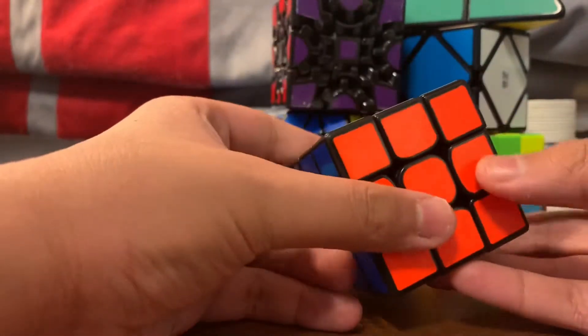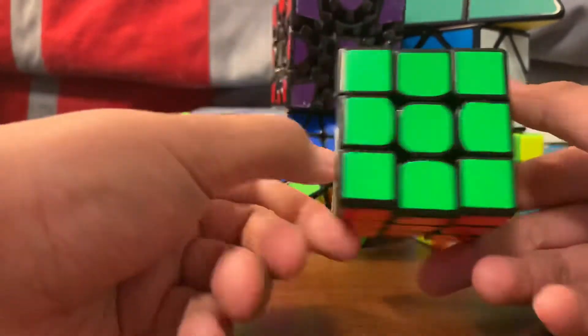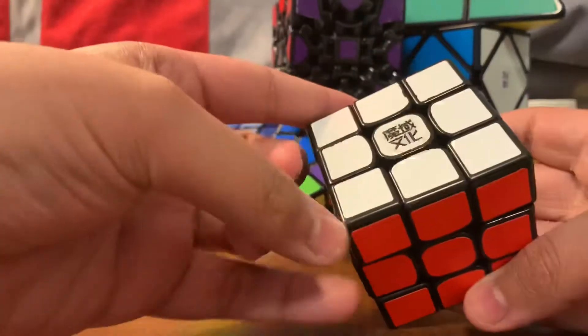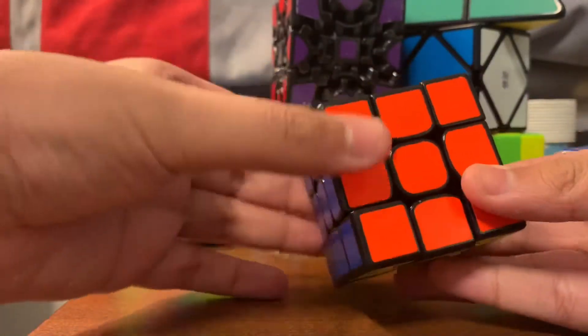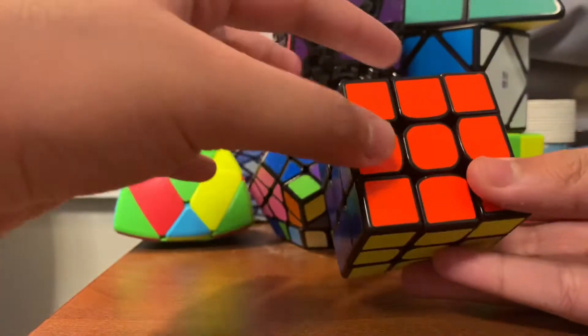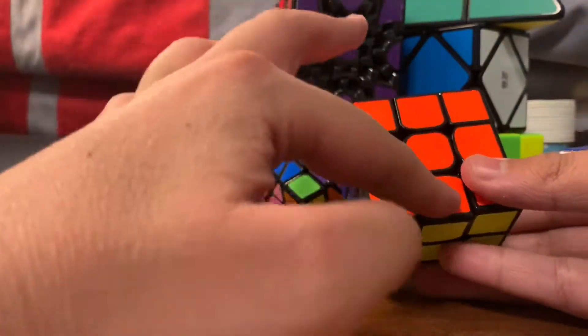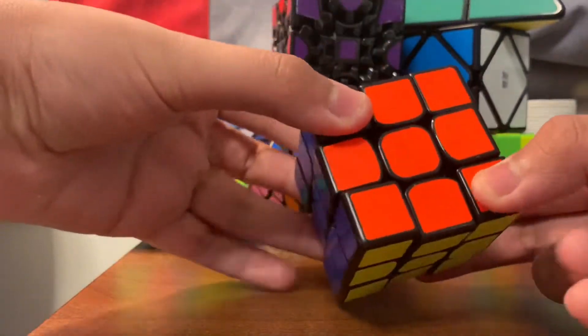So let's get started. First step is to take a fully solved Rubik's cube. Then take the cube from any side, and this is the middle layer. Take the middle layer and push it down.